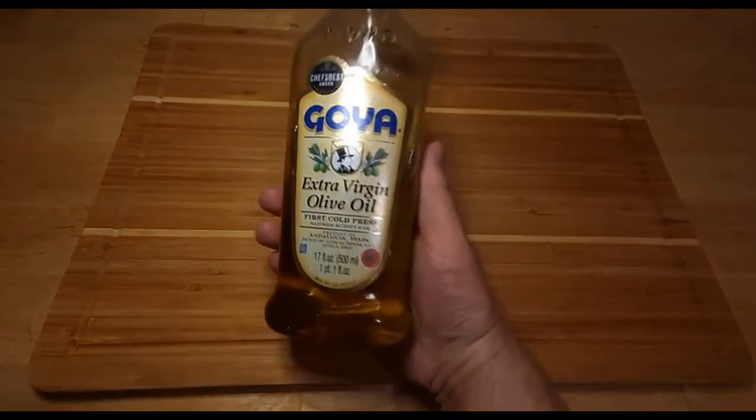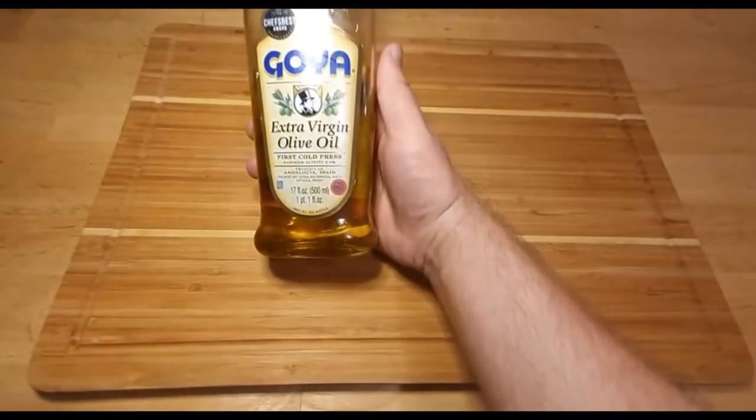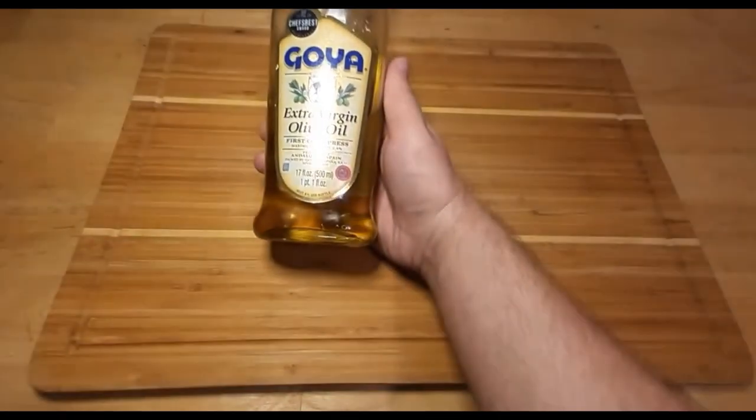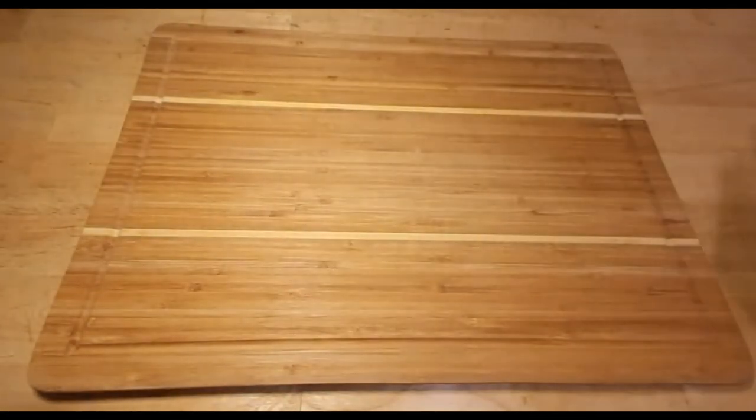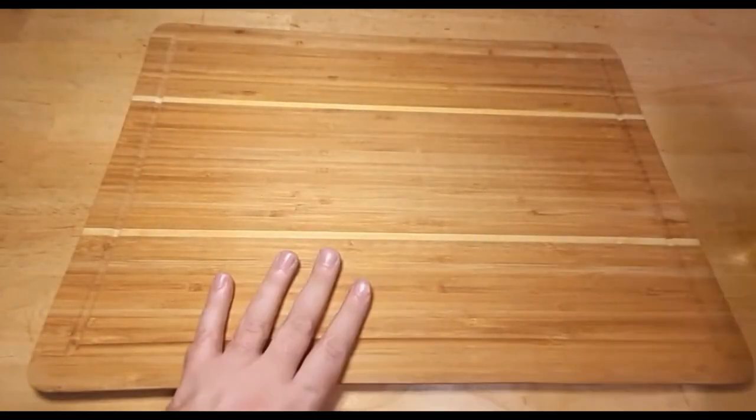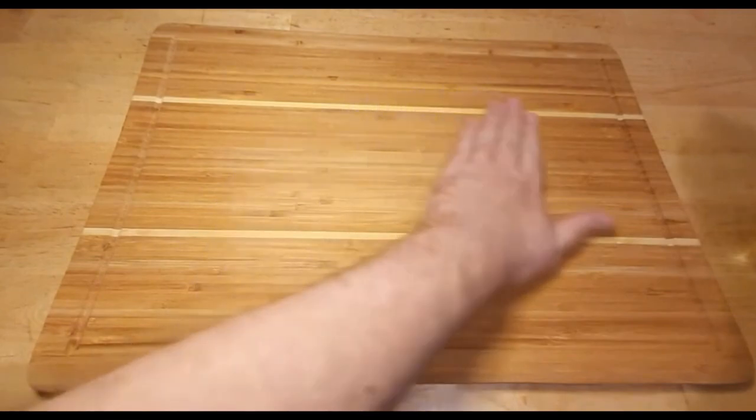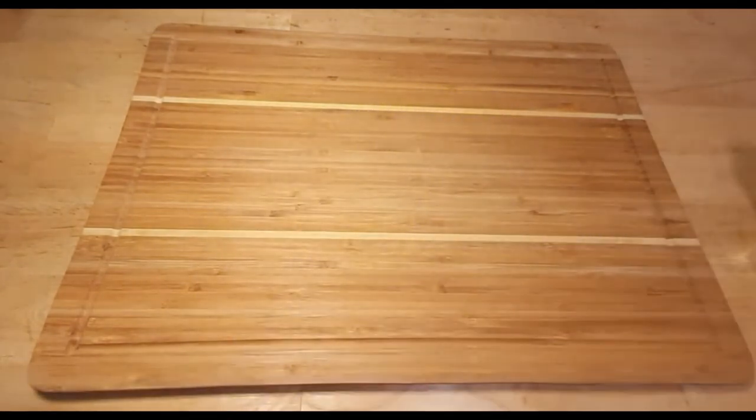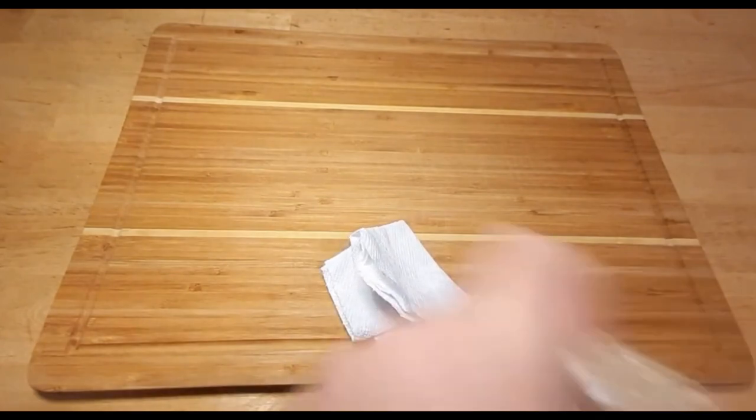Begin by thoroughly cleaning your cutting board after each use. Use mild dish soap, warm water, and a soft sponge or cloth to remove any food debris. Avoid using abrasive brushes or harsh chemicals as they can damage the bamboo surface.